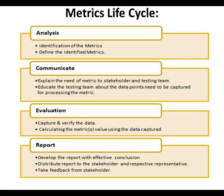This diagram shows the metrics life cycle. It consists of five main phases: analysis, communicate, evaluation and reporting. Under the analysis phase, we identify metrics and define the identified QA matrices. In the second phase, communicate, you need to explain the metrics to stakeholders and the testing team, and also educate the testing team about the data.